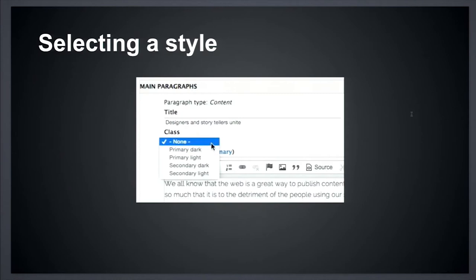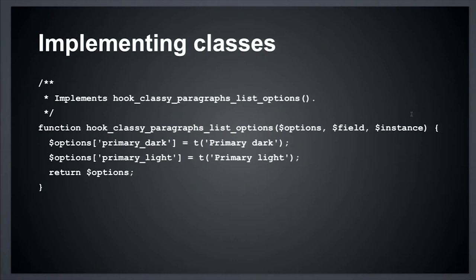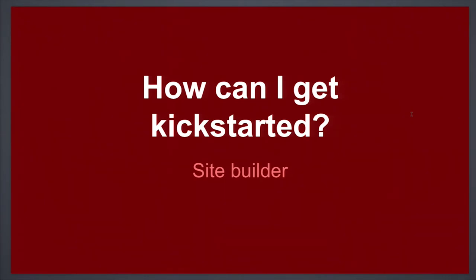The module implements a custom field called class list, which a site builder can add to any paragraph type. The module doesn't ship any styles, so the site builder has to implement hook_classy_paragraph_list to populate that drop-down. We've had the first issue in the queue asking for a UI for this — as most Drupal developers we said let's just do it with a hook. We are in the process of creating a UI. A designer then has to go in and style what 'primary dark' or 'primary light' looks like. We did actually create a 'funky' class for a client — and we do have that client in the audience today.